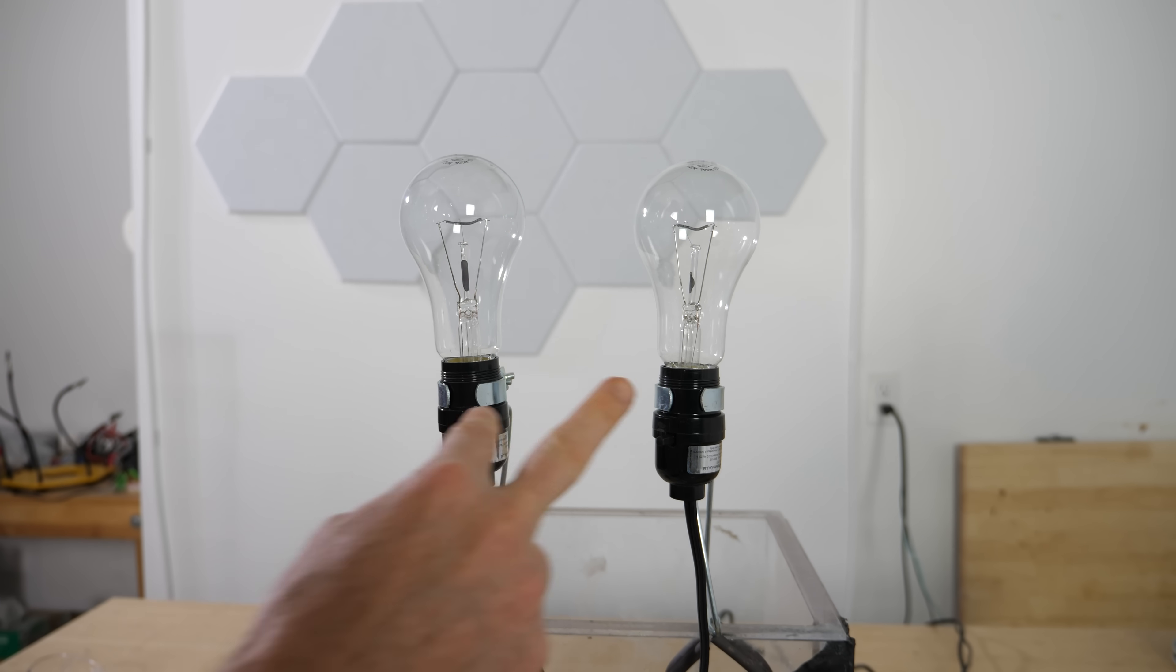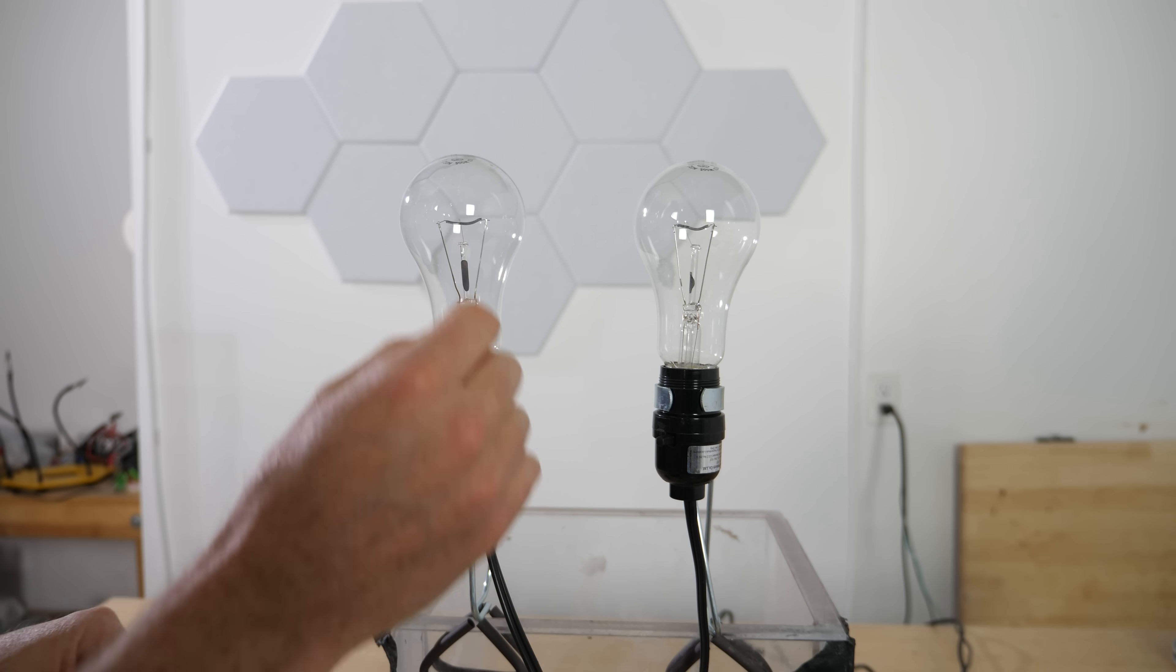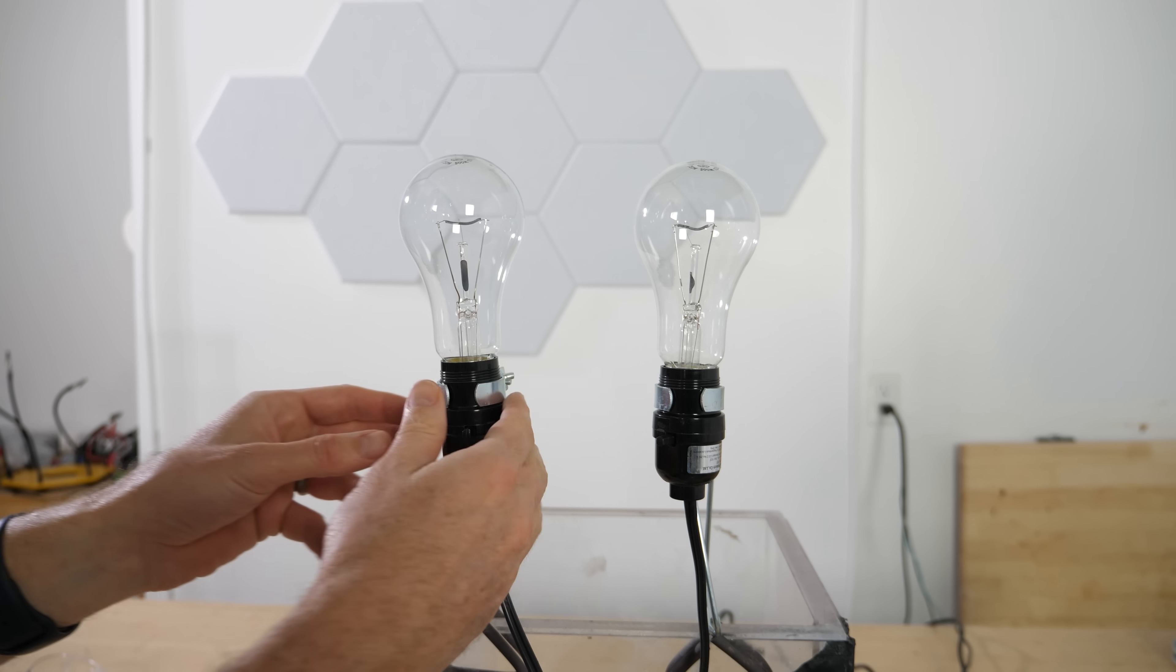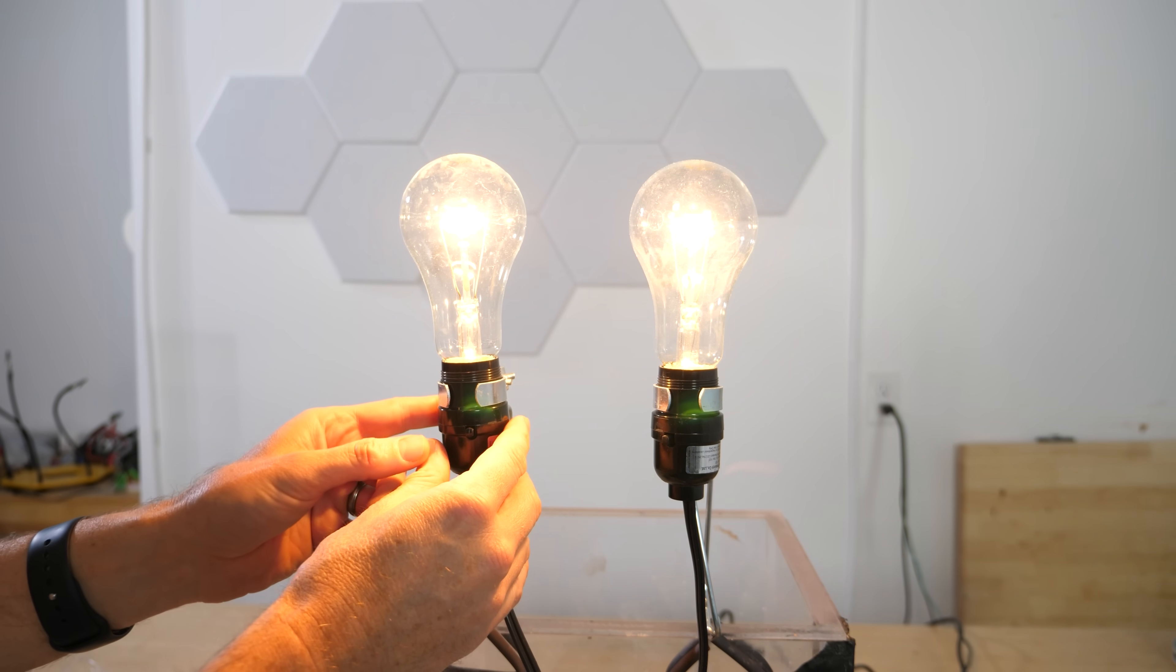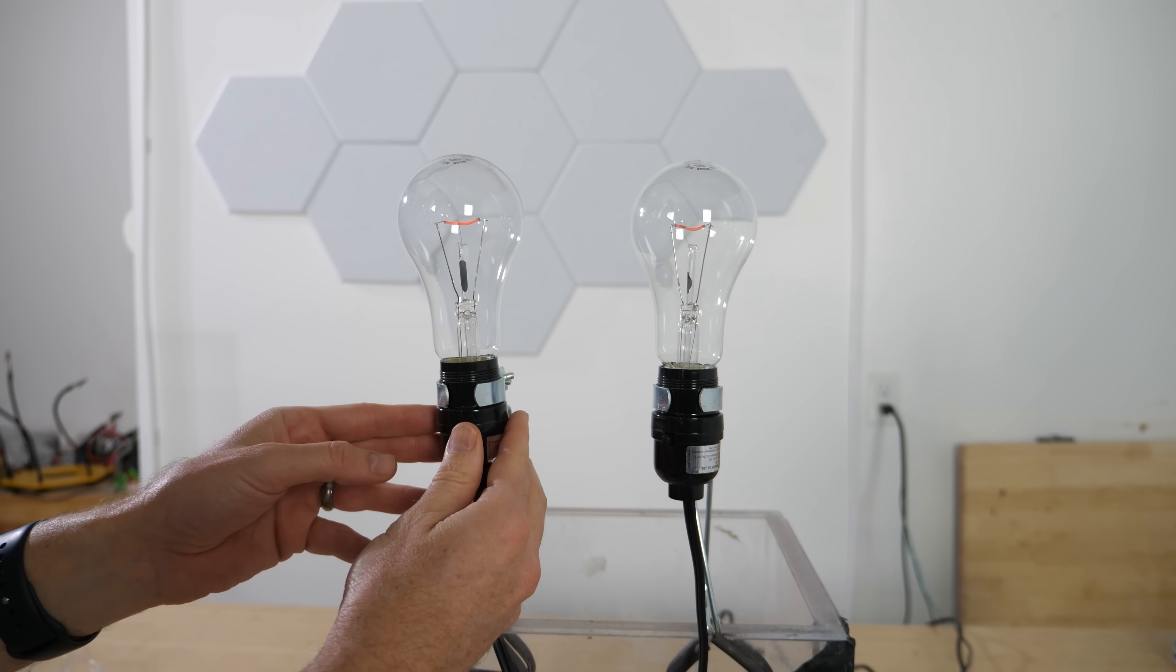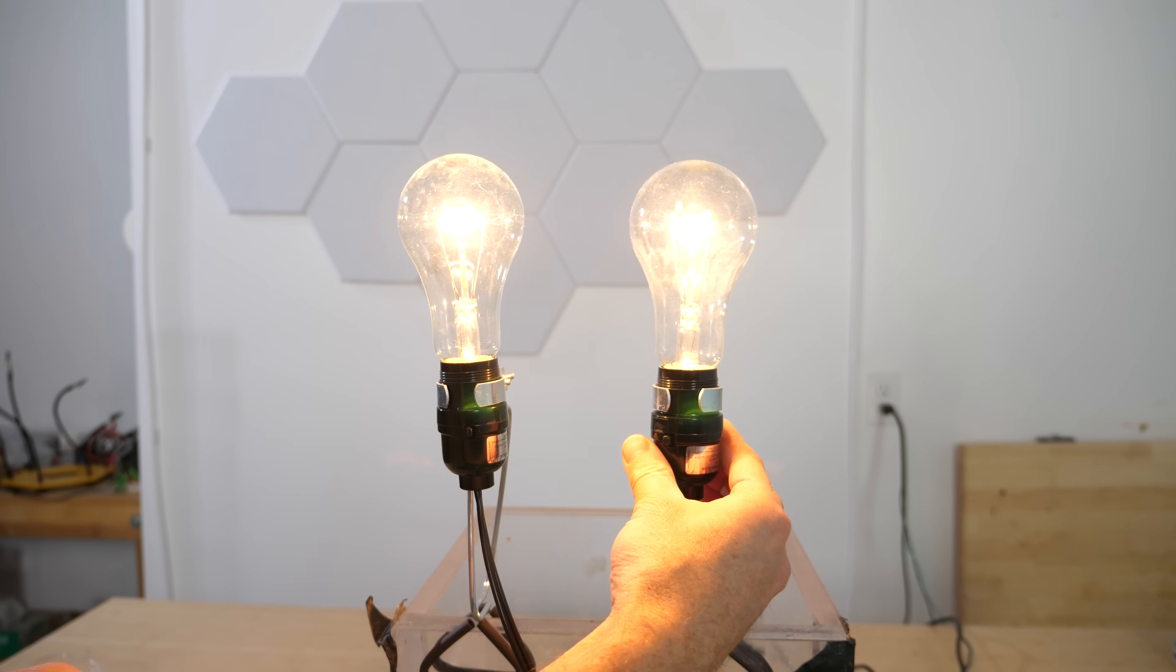I have here two incandescent bulbs that are wired in series so that for one of them to get power, the other one has to be on. So if I turn off only one of them, they both go off.